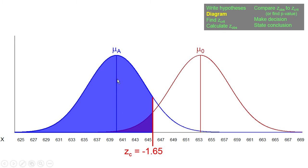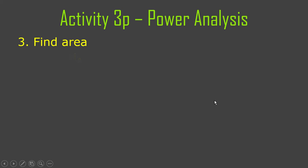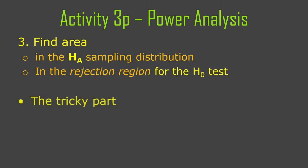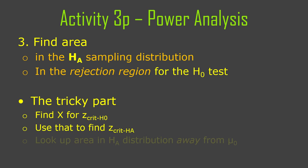The z-critical from the null hypothesis distribution is negative 1.65. That z-score doesn't work directly over in the alternative hypothesis distribution. To find the blue area (power), we need to work backwards: first find the raw score corresponding to the z-critical in the null hypothesis distribution, then use that raw score to find the z-score in the alternative hypothesis distribution, and finally look up the area corresponding to power in that alternative distribution.